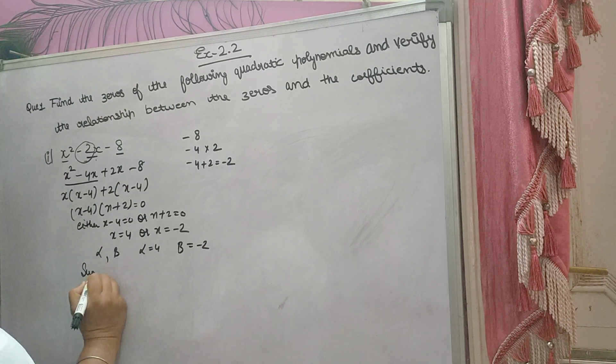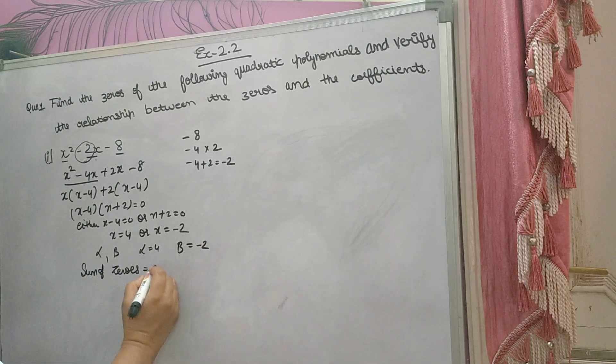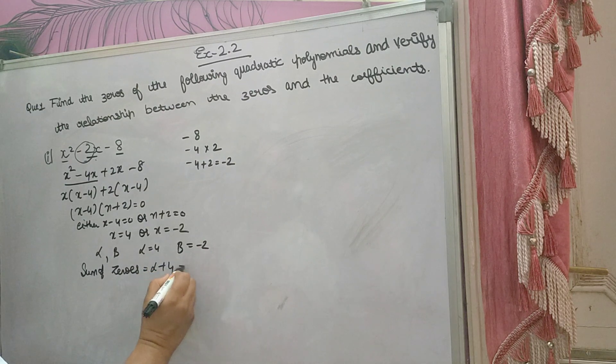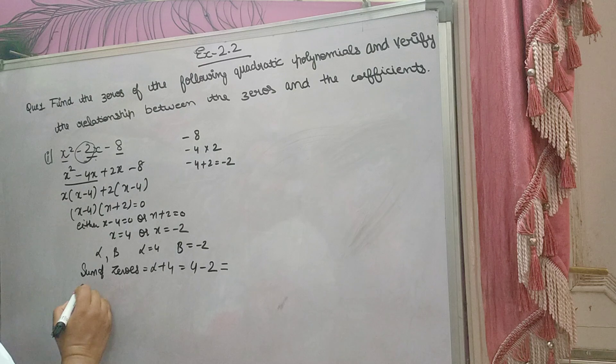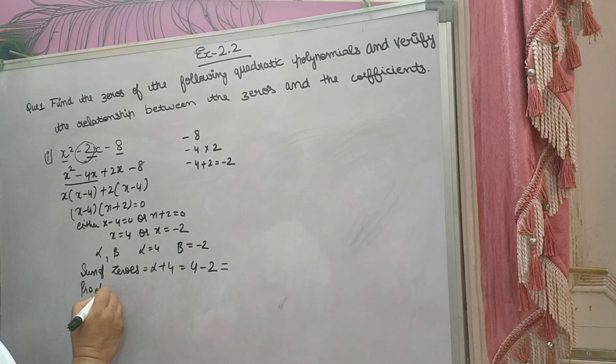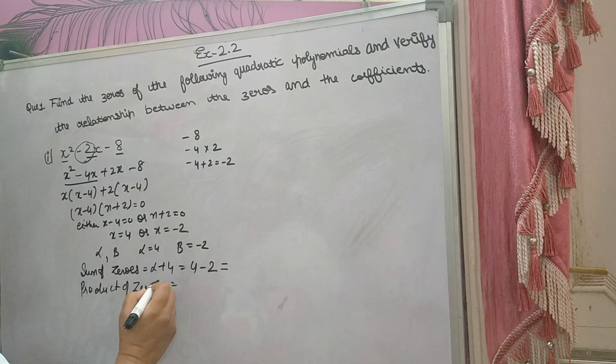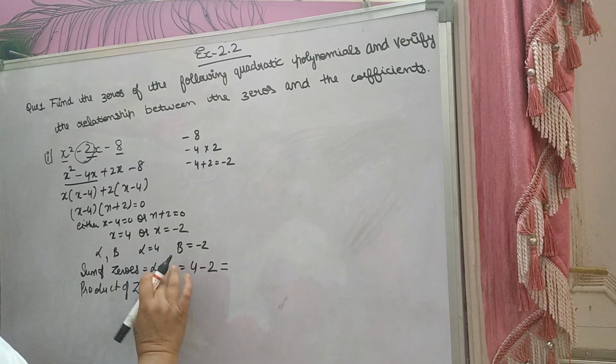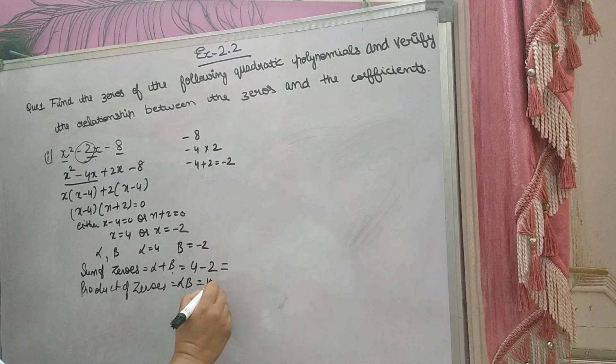Now sum of zeros. Sum of zeros according to this will come alpha plus beta, means 4 minus 2. And product of zeros according to this, alpha and beta, you will get here. Alpha into beta, product means multiply, that means 4 into minus 2.